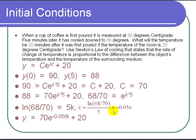Put it in our calculator. And that gives you negative 0.056. So finally, our solution to the differential equation is y equals 70e to the negative 0.056t plus 20.